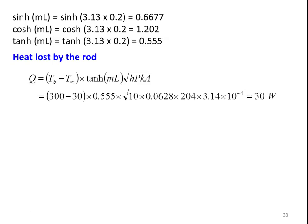The heat lost by the rod for the end-insulated fin: Q = (Tb − T∞) × tanh(ML) × √(HPKa). This equation is available in the heat and mass transfer data book. Substituting the numerical values: (300 − 30) × tanh(ML) = 0.555 × √(10 × 0.0628 × 204 × 3.14 × 10⁻⁴) = 30 watts.